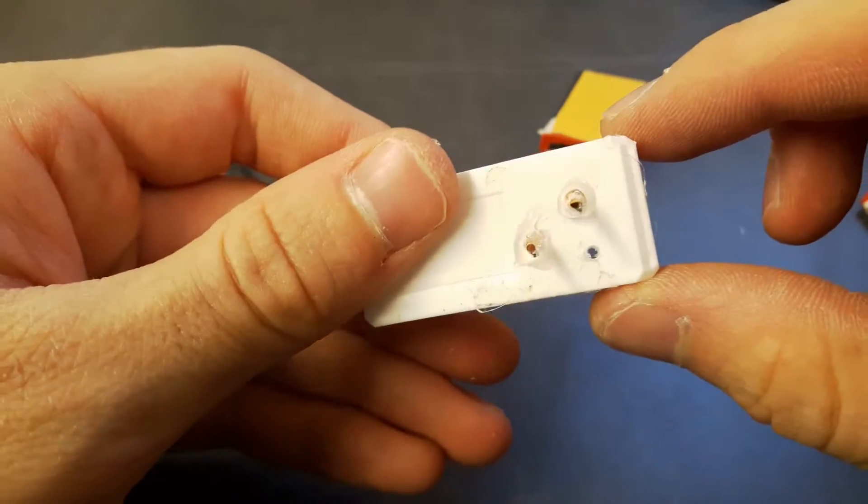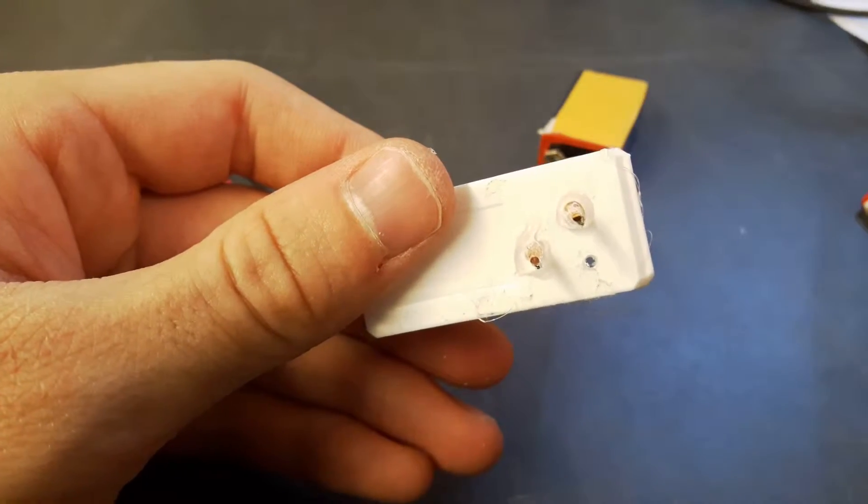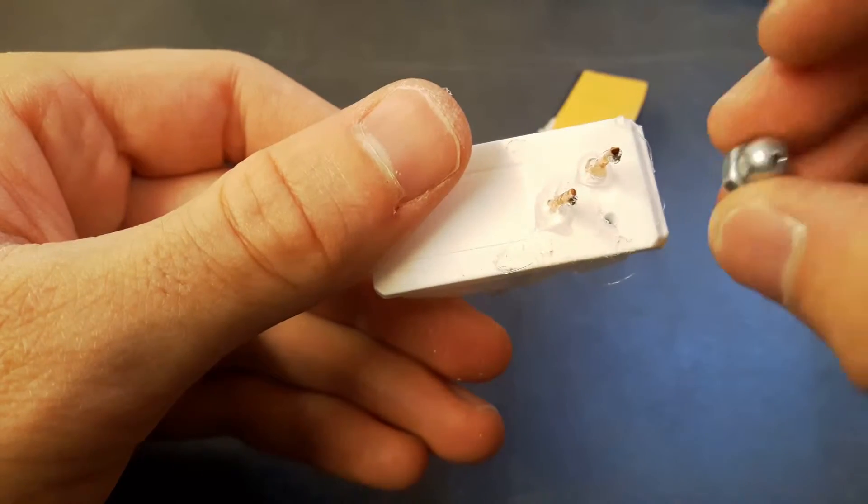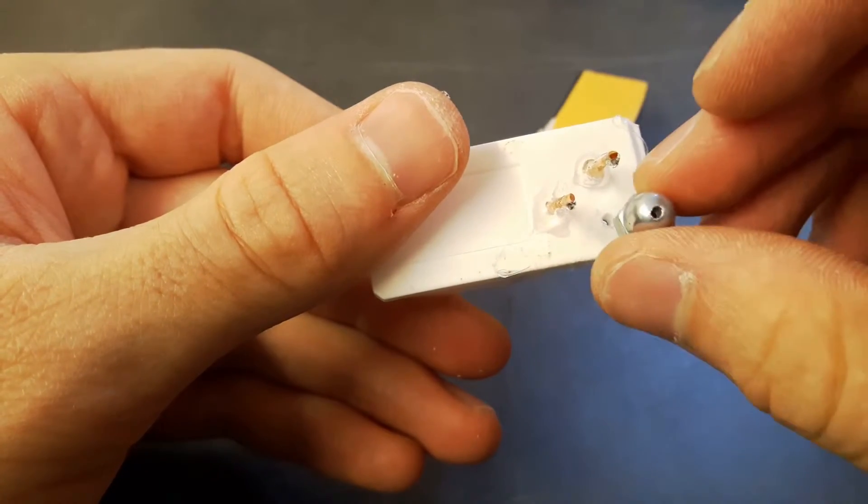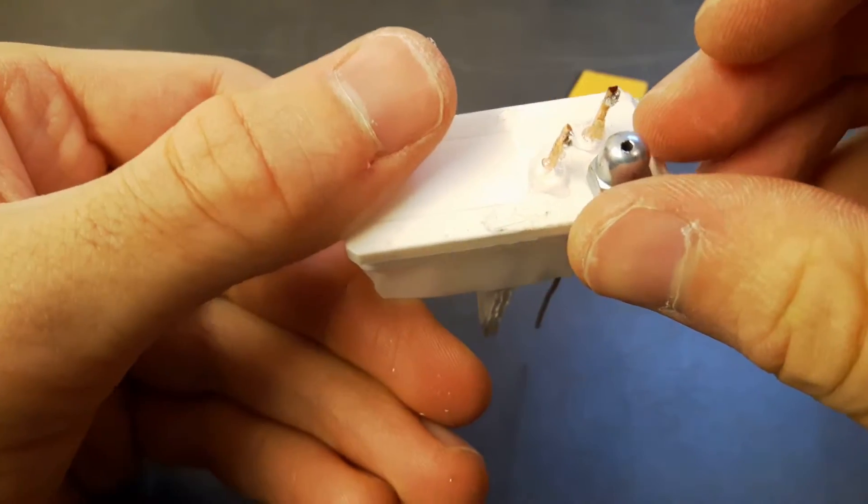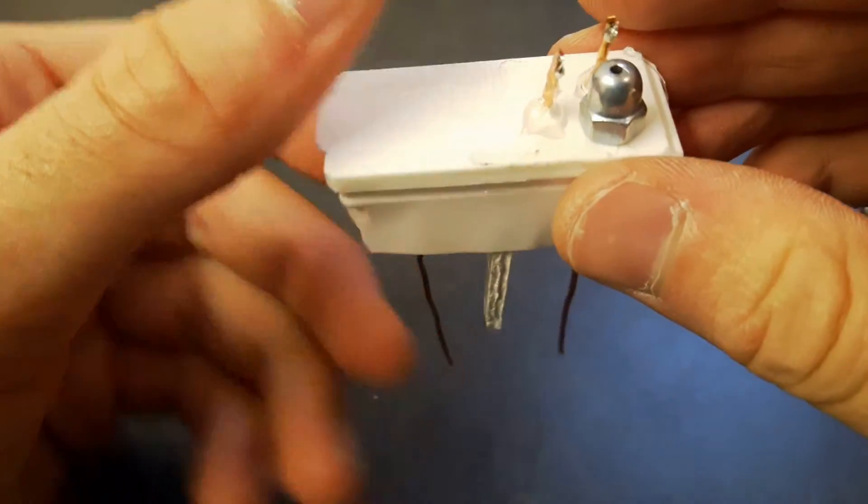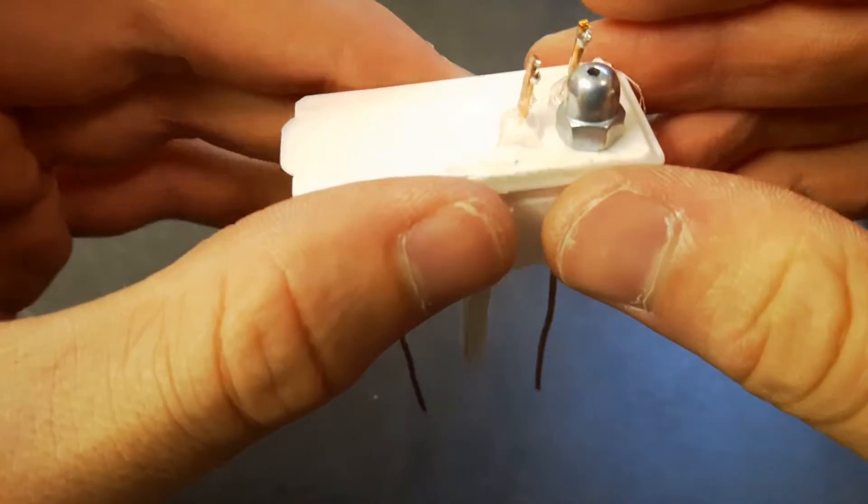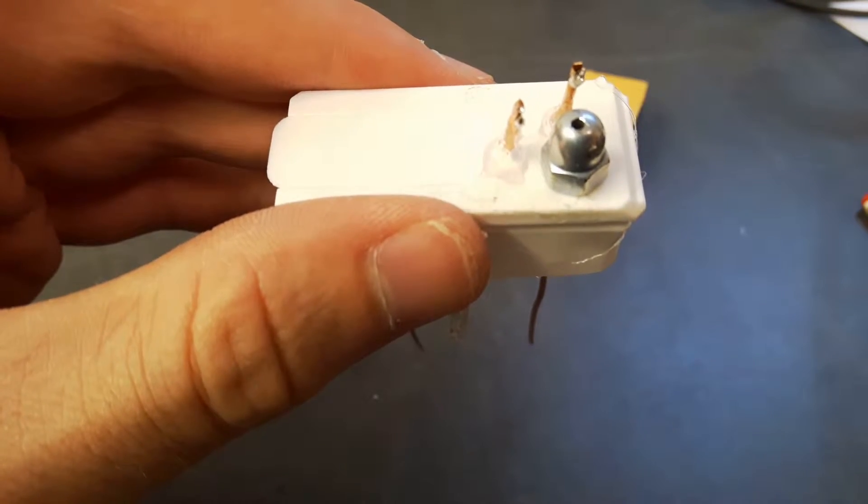So once this is connected with hot glue to the plastic, I drilled a third hole to mount the nut with the hole on top. And that will be the exit of the hydrogen, and there you can ignite it.